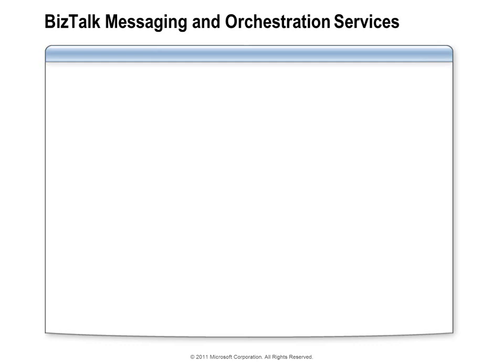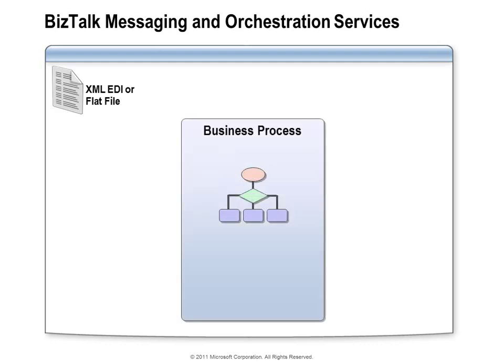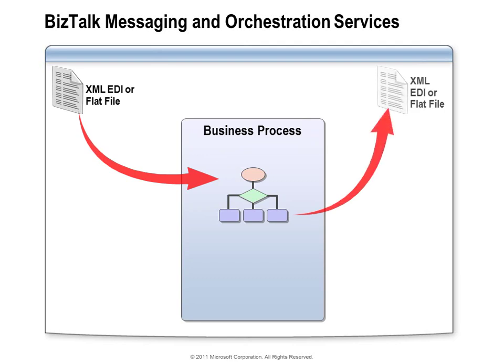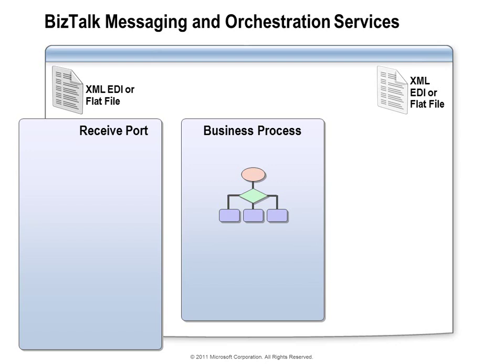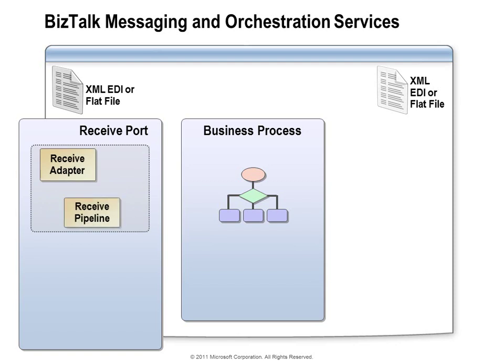How is BizTalk getting information from one system to the other, speaking different protocols and transforming information? Let's look at the components that make up a BizTalk application. At a high level, BizTalk takes a message, passes it through a business process, transforms it, and delivers it to the destination system. BizTalk accepts that message through a component known as a receive port, which is a container of other components. At a minimum, a receive port contains at least one pair of components known as a receive adapter and a receive pipeline — together known as a BizTalk receive location. The receive adapter is responsible for the communication link with the system sending data to BizTalk.